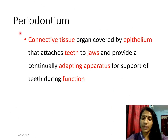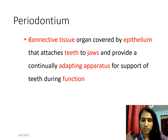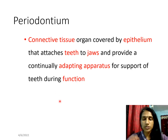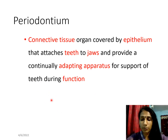Before we move on to what exactly is periodontal ligament, you have to learn the term periodontia. Perio means surrounding, so those structures which surround your tooth are called periodontia. It is basically made up of a connective tissue organ covered by an epithelium, and all these structures together attach the teeth to the jaw and provide a continuing adapting apparatus for support of the teeth during function.